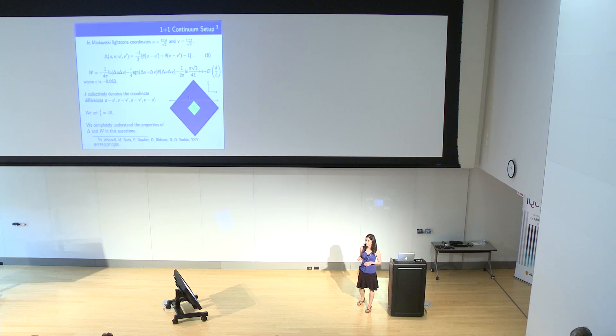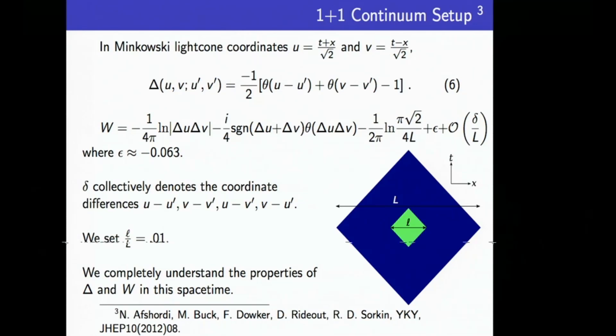We considered this spacetime entropy in continuum spacetimes with this setup. We have a smaller causal diamond within a larger causal diamond, and we're restricting the field to the smaller diamond with diameter curly L. We understand what W and delta look like in the spacetime. U and V are light cone coordinates.